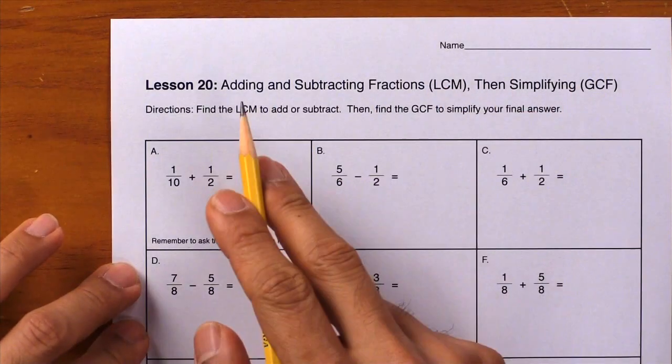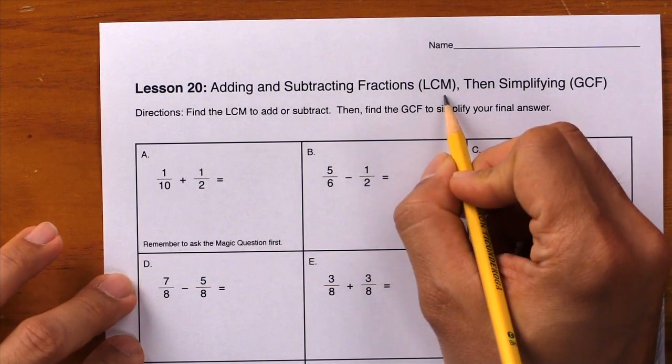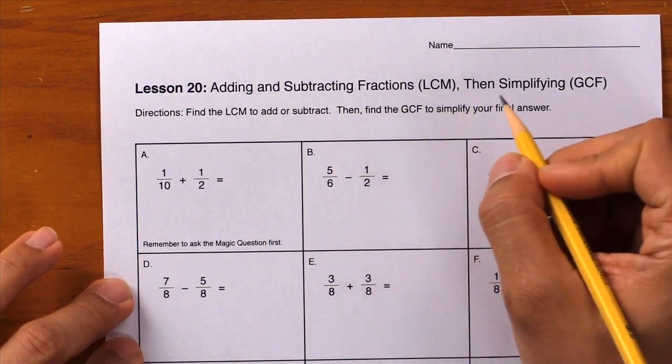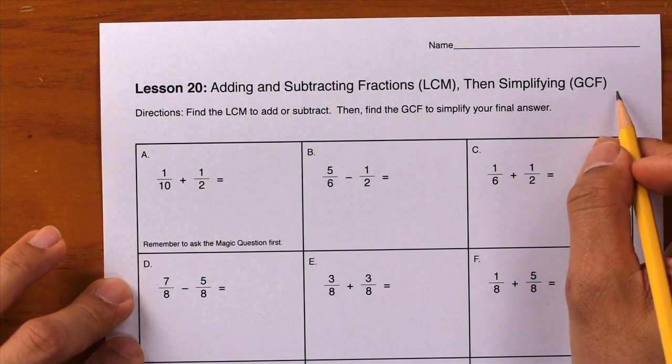Lesson 20 builds upon Lesson 19. Take a look here. Students are going to add and subtract fractions using the LCM, then they're going to simplify using the GCF. Let's go ahead and do one example together in box A.